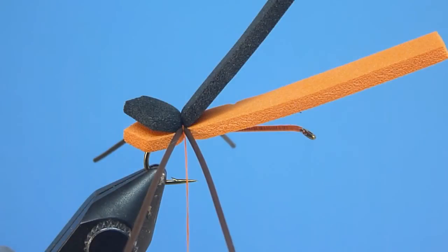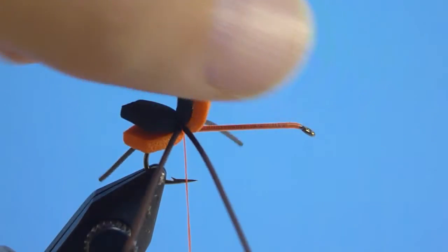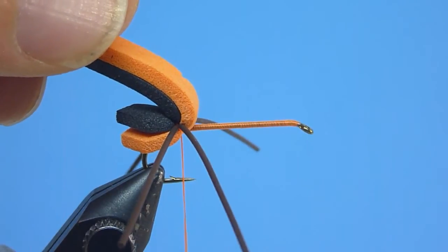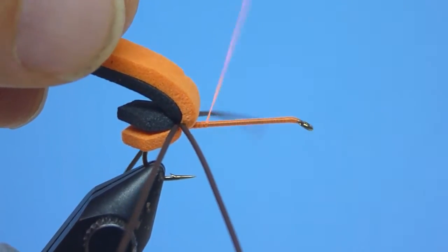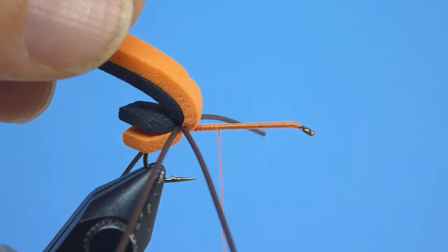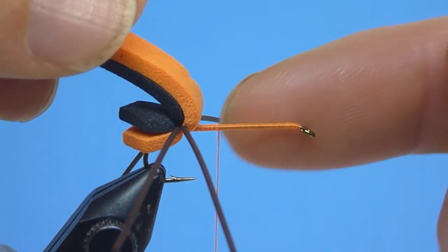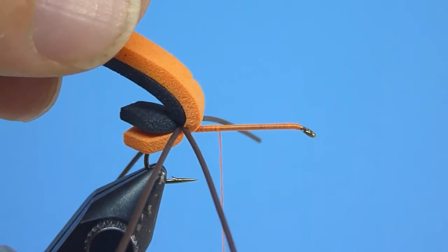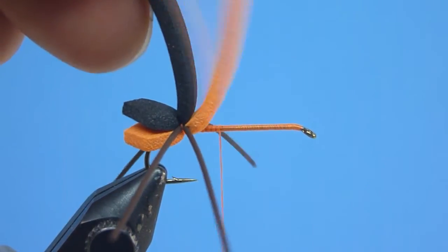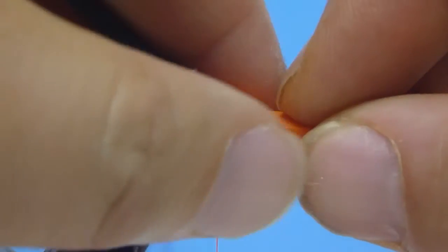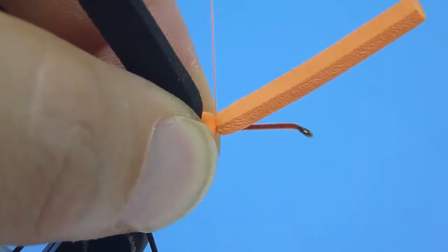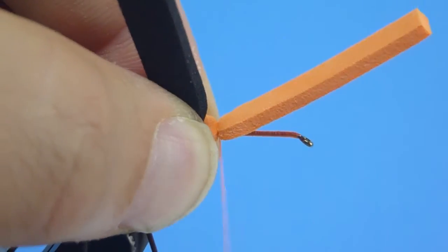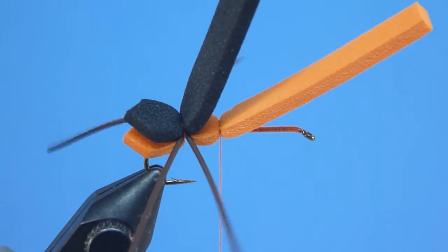Next, to create our ant's segmented underbody, we'll go ahead and lift, together, towards the rear, both the black and orange foam strips. With both held back by our off-hand, we'll then advance our thread quickly forward along our hook shank to a stopping point located about one-third the distance to our hook eye. Once there, we'll simply loosen our grasp over the orange underbody strip, and with the orange foam pressed neatly flat along the hook shank's top, we'll lash the first segment securely with a couple of well-placed, snug-wound thread wraps.